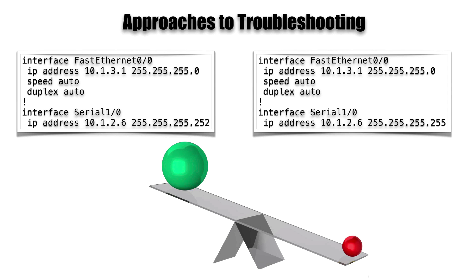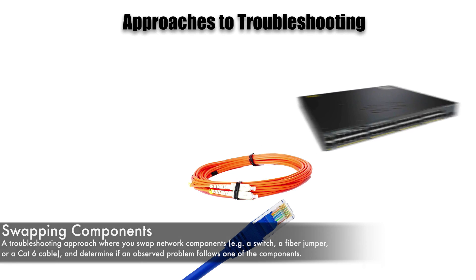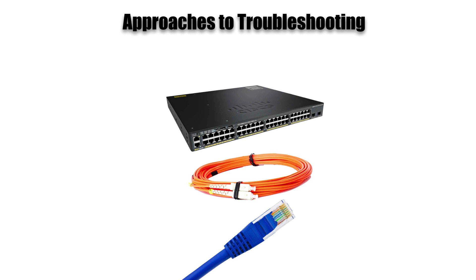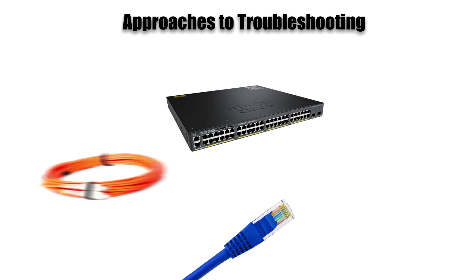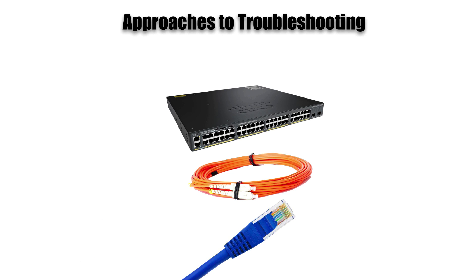One other common approach to troubleshooting is swapping out components. Let's say a PC cannot get to its default gateway. It could be a bad switch port into which the PC is connected — we might try a different switch port, or during a scheduled maintenance window, swap out the switch entirely. If swapping out the switch fixes the problem, we may have had an issue with that original switch. Maybe we swap out the fiber jumper going from a switch to a fiber patch panel, or replace the Cat5, Cat5e, or Cat6 cable going from the PC into the wall jack. We could also swap Cat6 cables and see if the problem follows the cable — if two PCs, one working and one not, swap network cables, we can see if the problem follows the cable. That's a look at some really common troubleshooting approaches. In our next video, we'll take a look at Cisco's structured troubleshooting model.